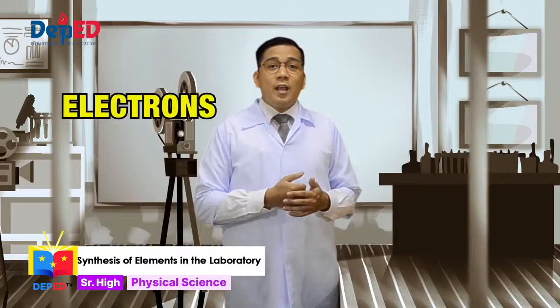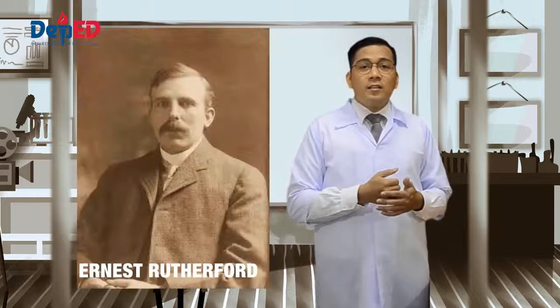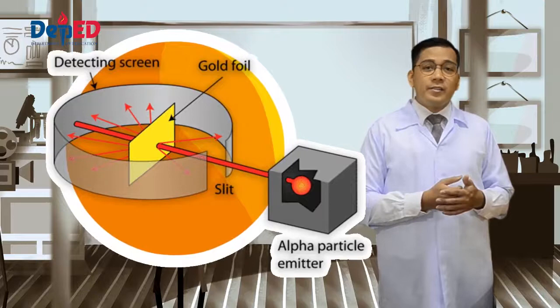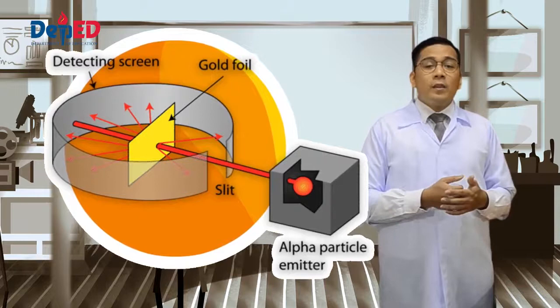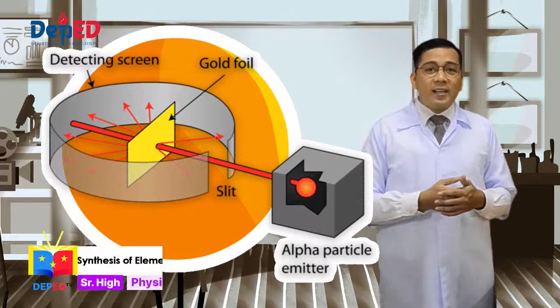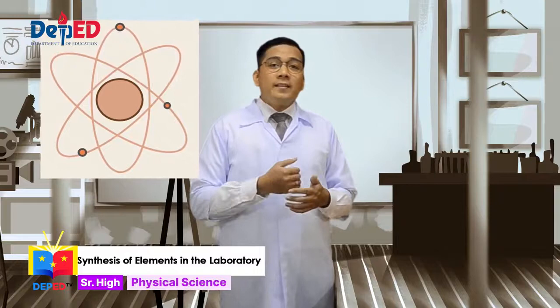He thought that these negatively charged particles were embedded in a positively charged atom. This was proven wrong when, in 1911, Ernest Rutherford did the gold foil experiment. He took a very thin gold foil and bombarded it with alpha particles. He then surrounded it with a screen that can detect alpha particles. He observed that most of the alpha particles passed through the foil. He concluded that most of the atom is empty space. He also observed that some of the alpha particles were deflected sideways and some bounced back. He concluded that the positive charge is concentrated at the center, while the negative charge orbits around it like how planets revolve around the sun. That is how he discovered the nucleus.